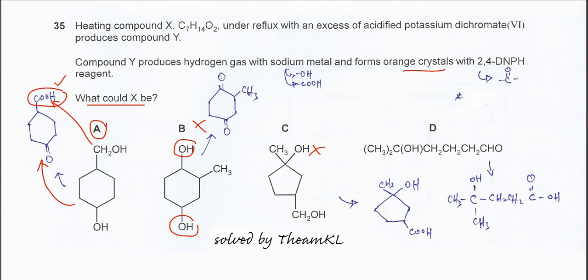So the products from this oxidation will just form hydrogen gas. It will not form the orange crystal with 2,4-DNPH.